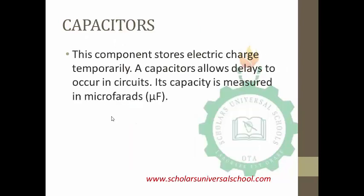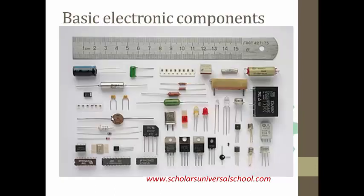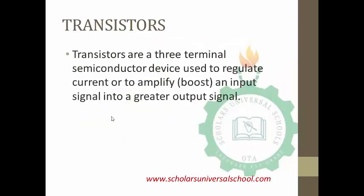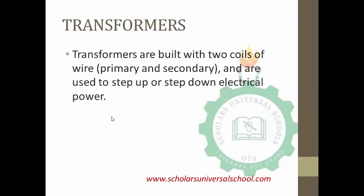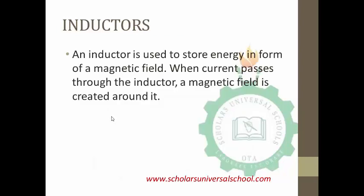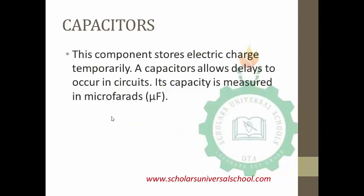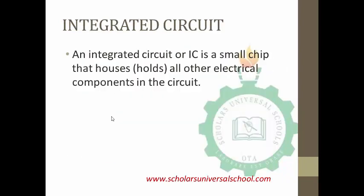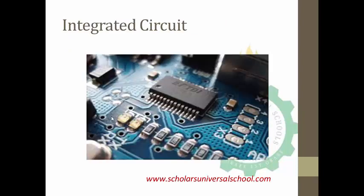In brief summary, the electronic devices we discussed are: resistors, which oppose the flow of electricity; transistors, which amplify the input signal to a greater output signal; transformers, which are used to step up or step down electrical power; inductors, which store energy in the form of a magnetic field; capacitors, which store electrical charge temporarily; circuit breakers, which prevent overloading by breaking automatically when the incoming current exceeds the circuit's capacity; and finally, the integrated circuit, which is the motherboard of the electrical circuit that houses the transistors, resistors, and all other components.